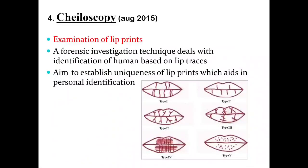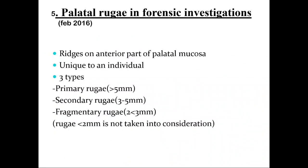Cheiloscopy is the examination of lip prints, a forensic investigation technique dealing with identification of humans based on lip traces. It aims at the uniqueness of each lip print, which can help in identification of each person. The types are Type 1, Type 2, Type 3, Type 4, and Type 5, as given in the textbook of oral pathology under the forensic chapter, and also in Schafer's and Ongole's textbooks.